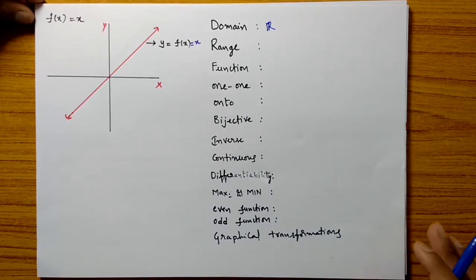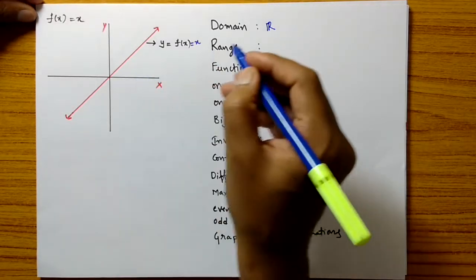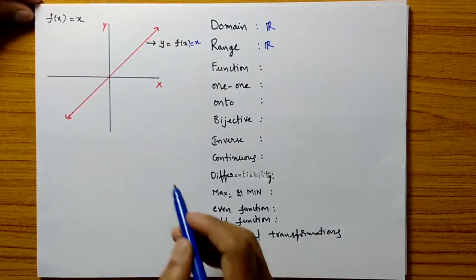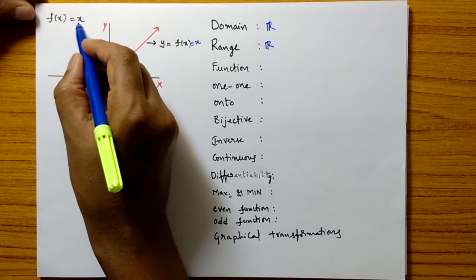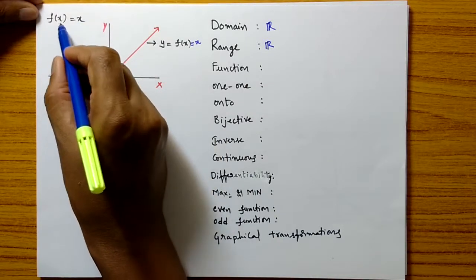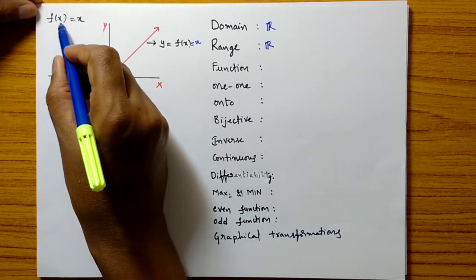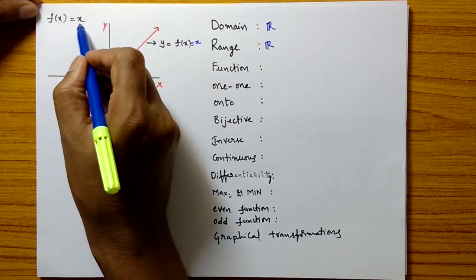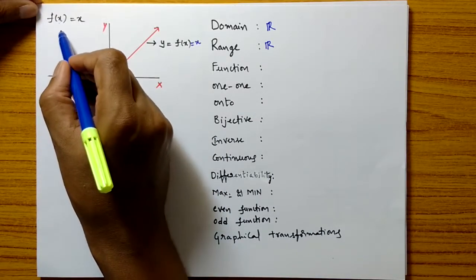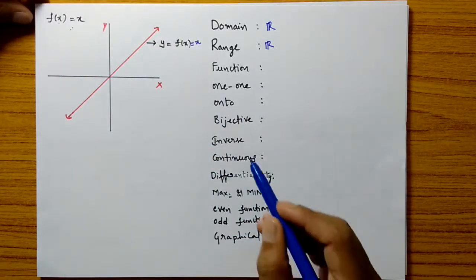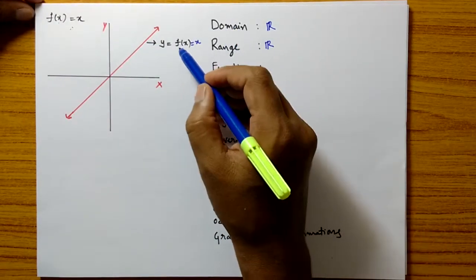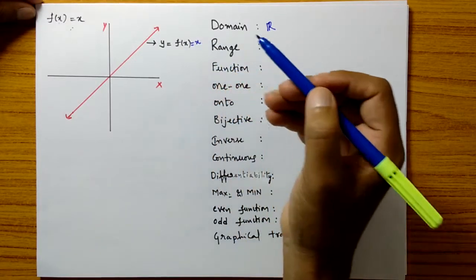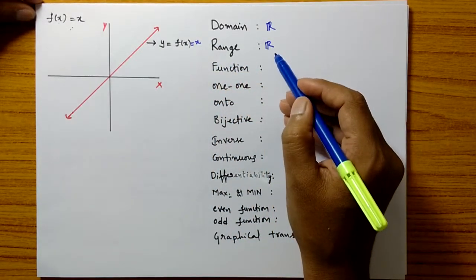What is the range of this function? The range is also the set of all real numbers because f of x is x. For example, f of 1 is 1, f of 2 is 2, f of 3 is 3. Whatever real value you take, f of x will give the same real value. That's why its range is R.